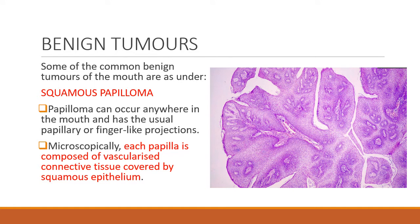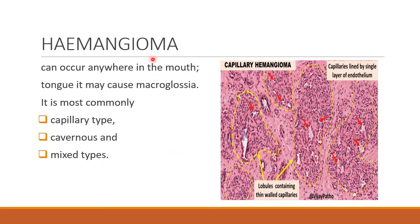First, common benign tumors. Squamous papilloma can occur anywhere in the mouth and has the usual papillary or finger-like projections. Microscopically, the papillae are composed of vascularized connective tissue covered by squamous epithelium. Second is hemangioma, a tumor of the blood vessels that can occur anywhere in the mouth; if it occurs in the tongue it may cause macroglossia. It is most commonly of three types: capillary, cavernous, and mixed. Capillary hemangioma shows lobules containing thin-walled capillaries lined by endothelium. Cavernous type shows more dilated vessels, and mixed type shows both parts.